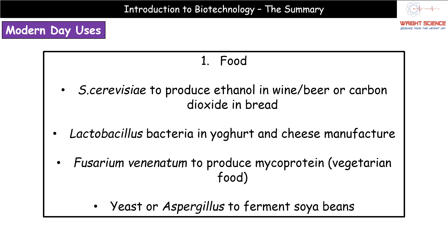We still produce yogurt and cheese using a type of bacteria called Lactobacillus. A more modern development is mycoprotein — 'myco' relating to fungi — a protein that comes from a fungus. The species Fusarium venenatum is used to produce mycoprotein, which is found in products like Quorn. We can also carry out fermentation on soya beans using either yeast or the fungus Aspergillus, giving us a range of uses in the modern food industry.